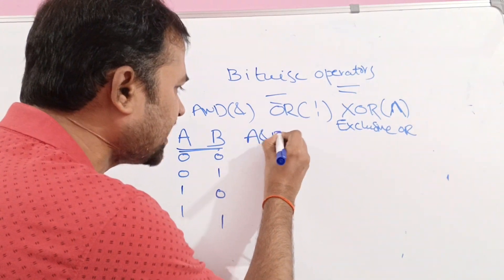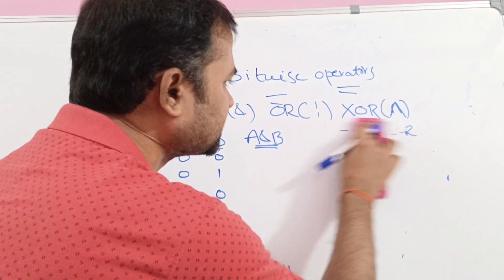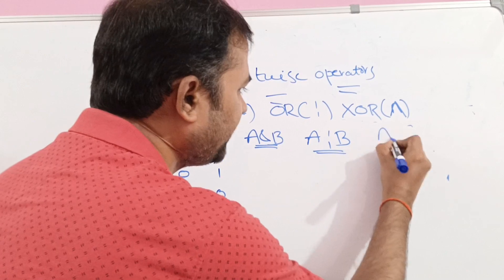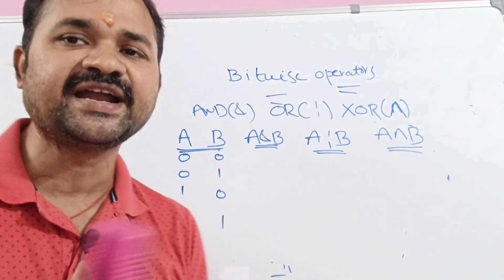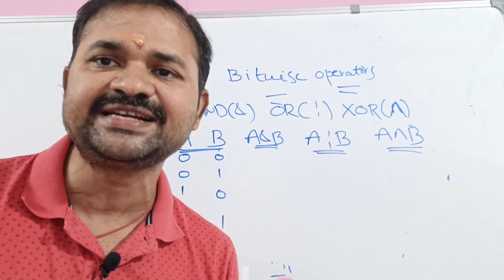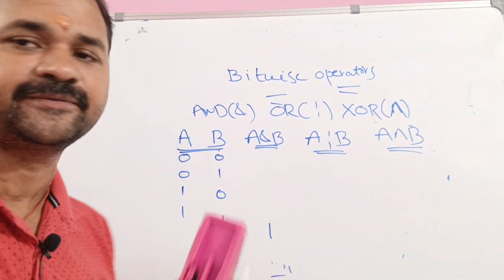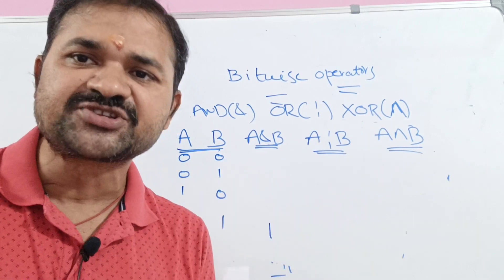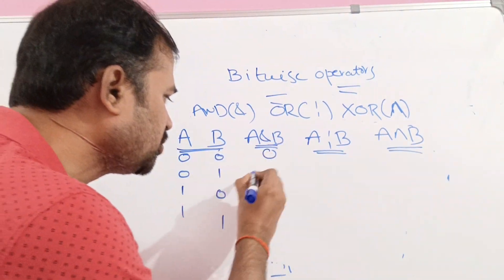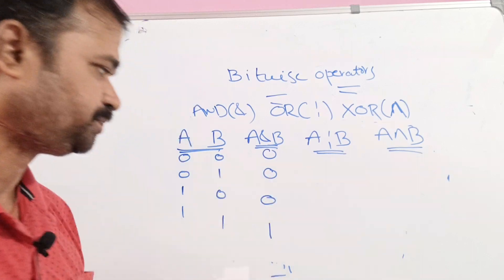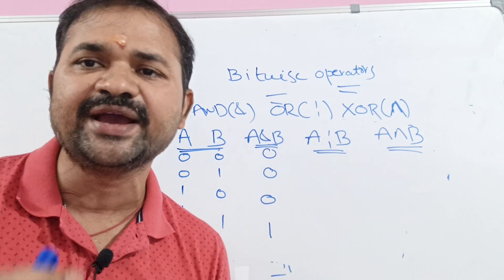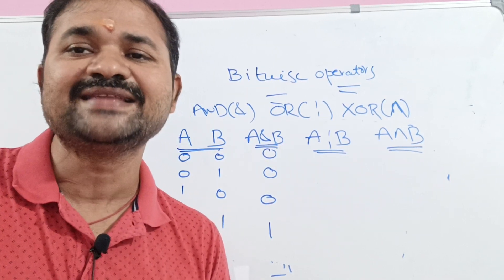For bitwise AND (A AND B): when both bits are 1, the result is 1; otherwise the result is 0. So 0&0=0, 0&1=0, 1&0=0, and 1&1=1. For bitwise OR (A OR B): when at least one bit is 1, the result is 1; otherwise 0. So 0|0=0, 0|1=1, 1|0=1, and 1|1=1.